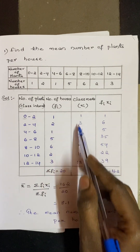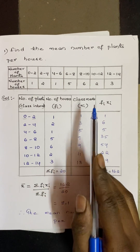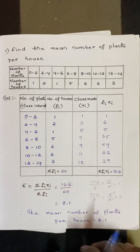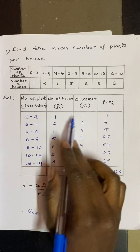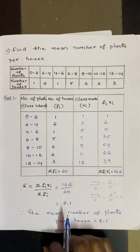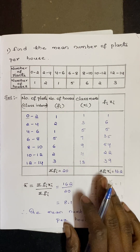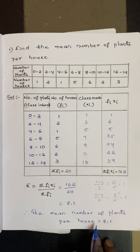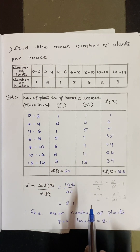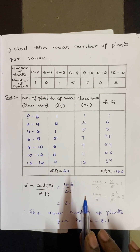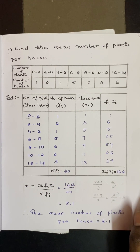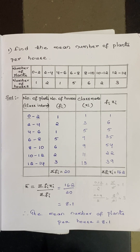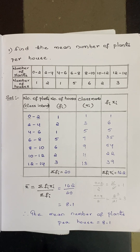This is how you solve problems on arithmetic mean using the direct method. Since the values of fi and xi are smaller, the direct method is easy to use. If the values are bigger, we would use the assumed mean method or the step deviation method. I hope you have understood — this will be helpful for 10th class students. Thank you.